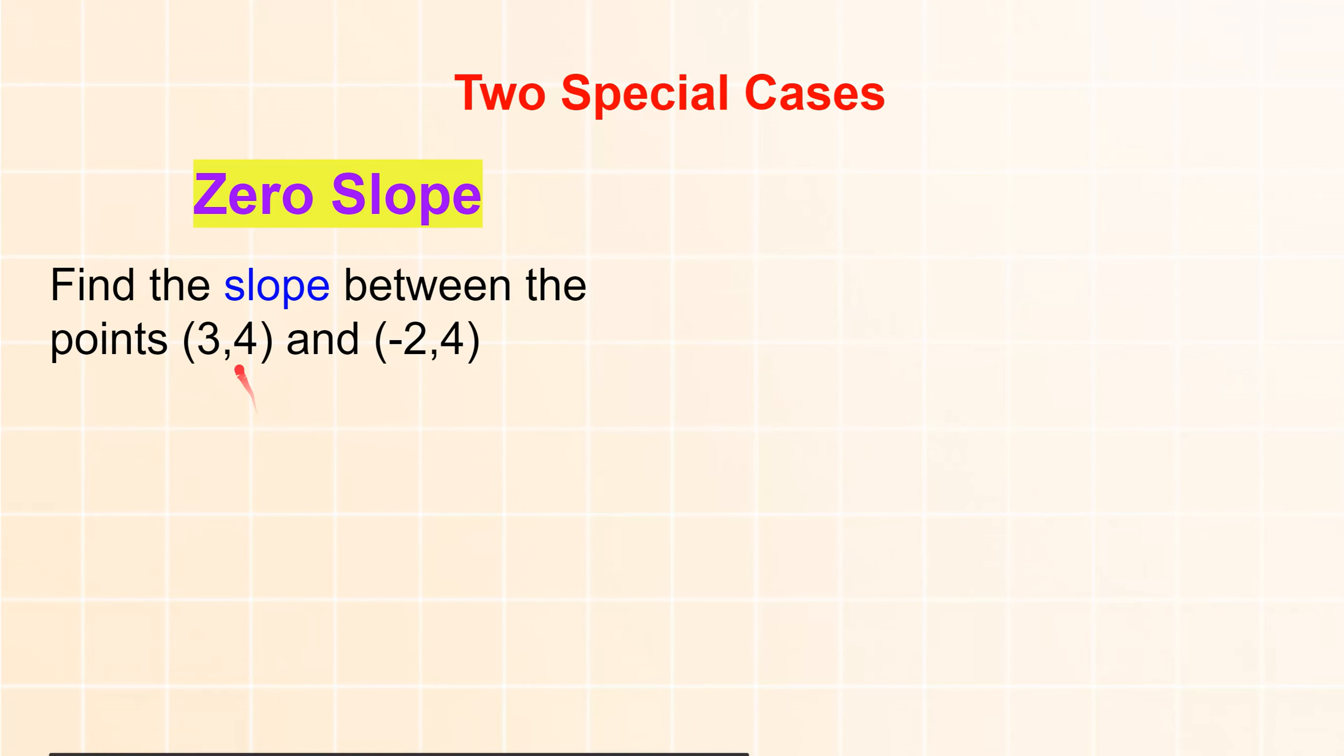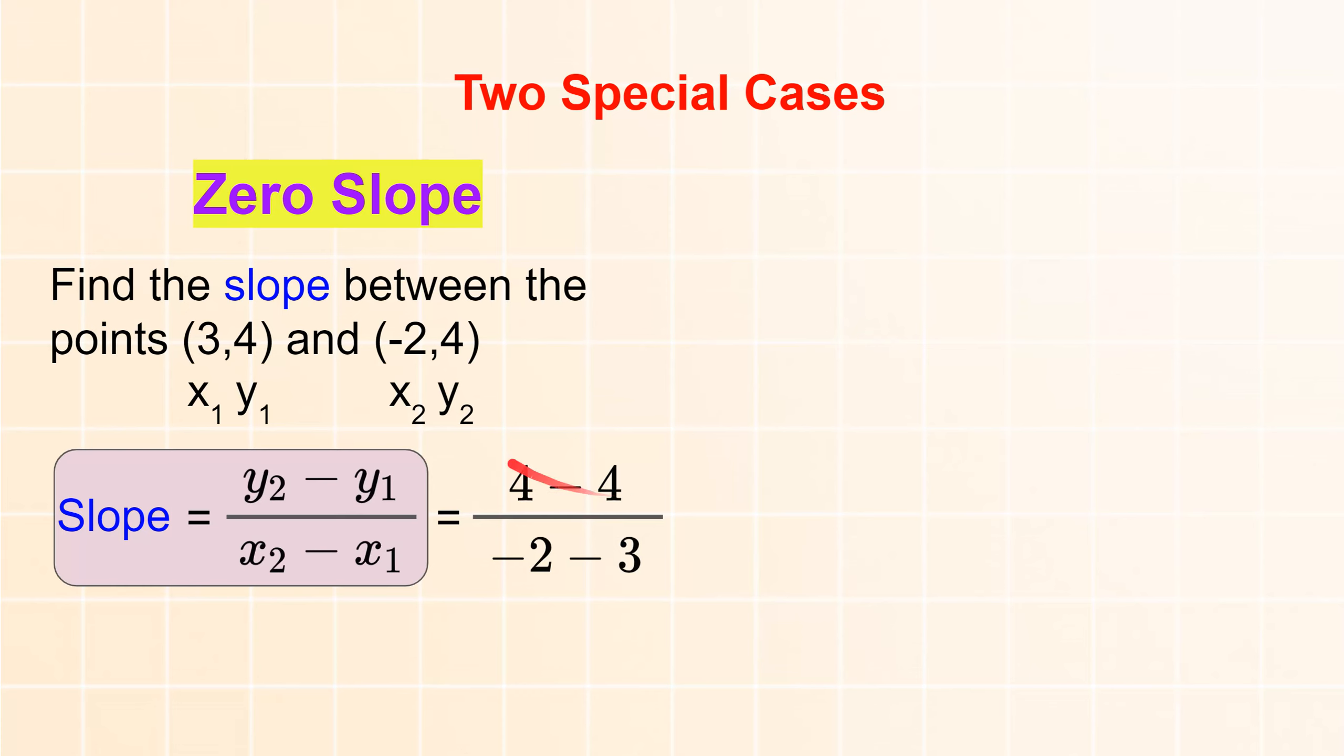So if you've got two points that have the same y value, if you subtract the y value on the numerator of the slope formula, 4 minus 4, it would be 0. So 4 minus 4 would be 0.